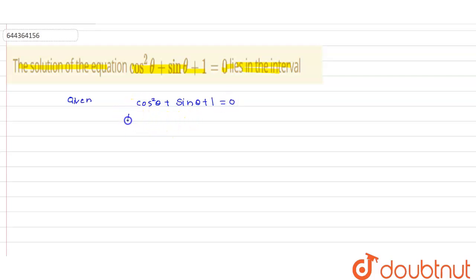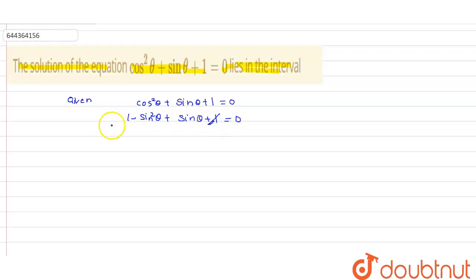Here, cos²θ can be written as 1 − sin²θ. So substituting: (1 − sin²θ) + sinθ + 1 = 0. Rearranging, we have the equation: sin²θ − sinθ − 2 = 0.